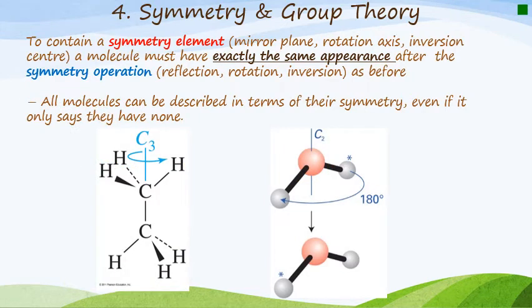Now, for a molecule to contain a symmetry element, like a mirror plane or rotation axis or an inversion center, the molecule must have the exact same appearance after the operation. So for example, if we were to apply a reflection, a rotation, or an inversion, it must look the same as before when we started.